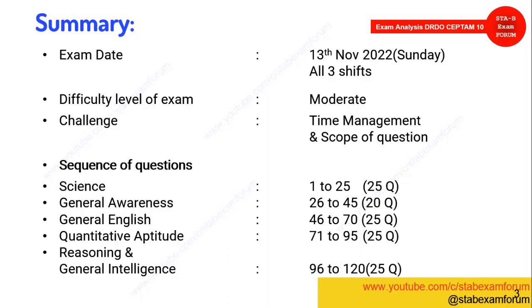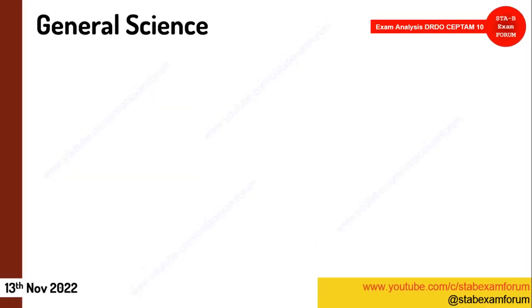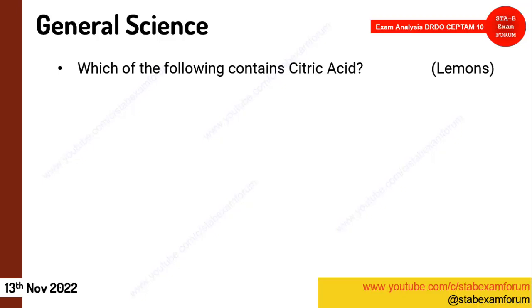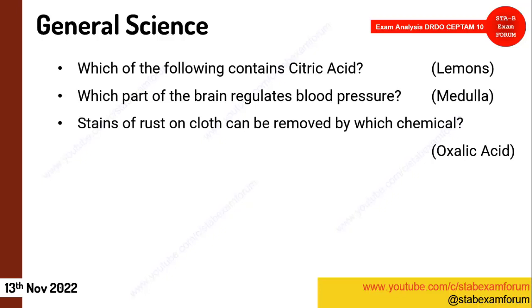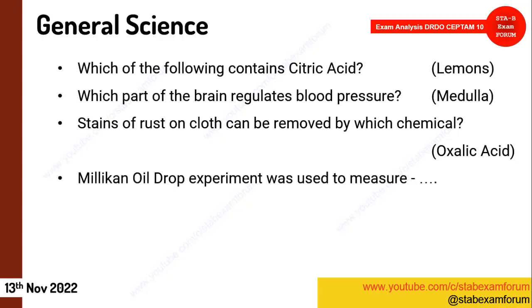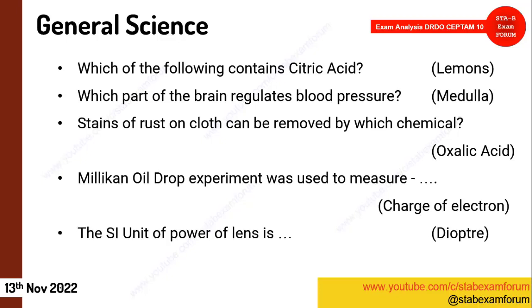Let's see the first section: General Science. The first question — 'Which of the following contains citric acid?' — is very easy; the answer is lemons. The next question from biology: 'Which part of the brain regulates blood pressure?' — the answer was medulla. The next question: 'The stain of rust can be removed by which chemical?' — the answer was oxalic acid. One question on the Millikan oil drop experiment came, which was used to measure the charge of an electron. A very easy physics question: the SI unit of power of a lens is dioptre.